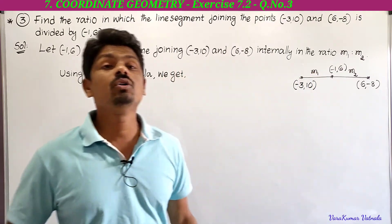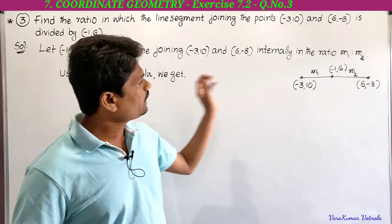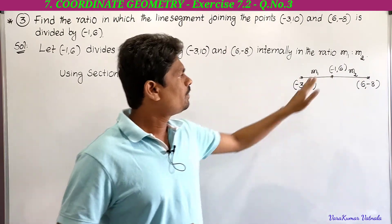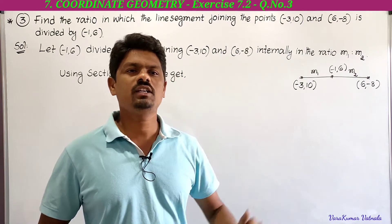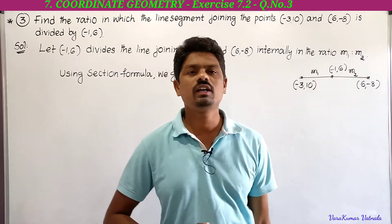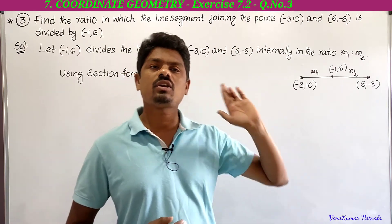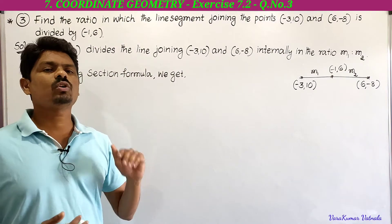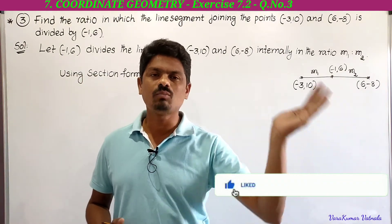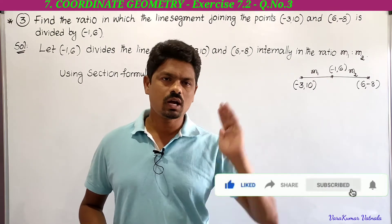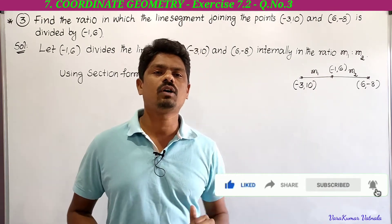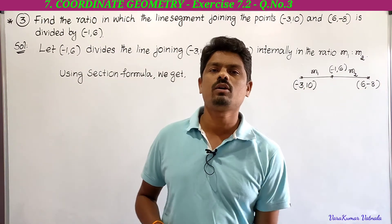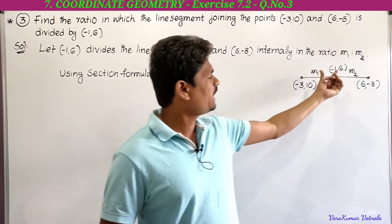We have to find the values of m1 and m2 using the section formula. Using section formula: the coordinates of the point dividing the line are given by (m1·x2 + m2·x1) / (m1 + m2) comma (m1·y2 + m2·y1) / (m1 + m2). Here (x1, y1) is the first point and (x2, y2) is the second point.